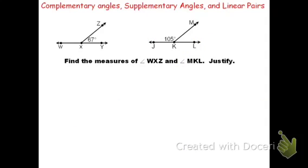Here are two more examples to work out: find the measure of angle WXZ and the measure of angle MKL. Pause the video, work it out on your own, and hit play when you're ready. Both of these are going to be linear pairs — supplementary angles which form a straight angle, or supplementary angles which are adjacent — so for both problems the angles sum to 180 degrees.